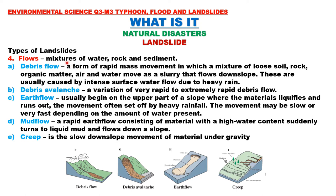Fourth type is flows — mixtures of water, rock, and sediment. There are several types of flows. First is debris flow: a form of rapid mass movement in which a mixture of loose soil, rock, organic matter, air, and water moves as a slurry that flows downslope. These are usually caused by intense surface water flow. Second is debris avalanche: a variation of very rapid to extremely rapid debris flow.